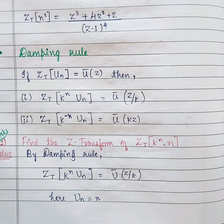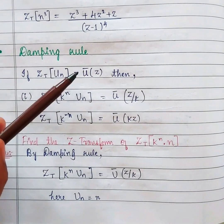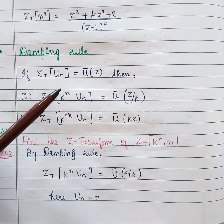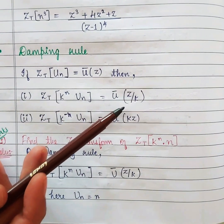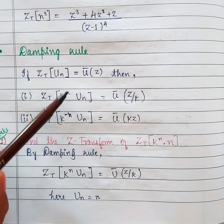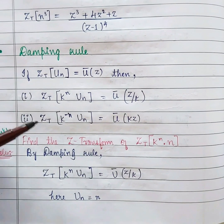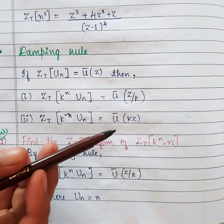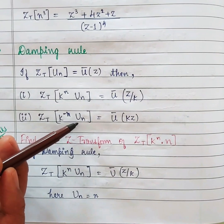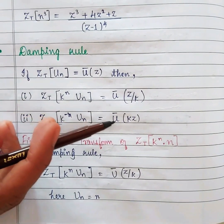Here comes another important property — the damping rule. If Z{u_n} = ū(z), then Z{k^n · u_n} = ū(z/k). That means if I know the Z transform of a function u_n, I can find the Z transform of k^n · u_n by simply replacing z with z/k wherever z appears. Similarly, Z{k^(−n) · u_n} = ū(k·z).